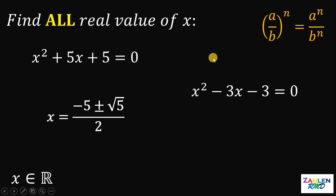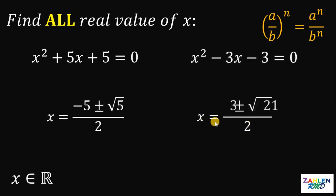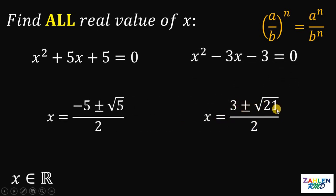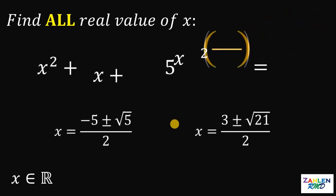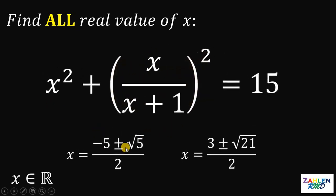The solution to the second equation is left as your exercise. Using the quadratic formula on x²−3x−3 = 0, you get x = (3 ± √21) / 2. Therefore, we have four real values for x: (−5 ± √5)/2 and (3 ± √21)/2. And as always, we are done.